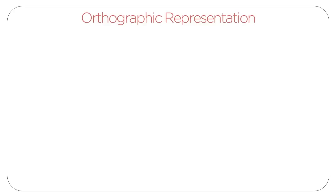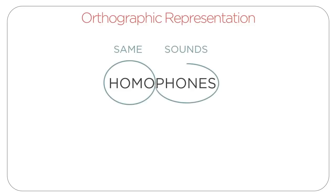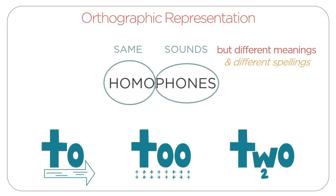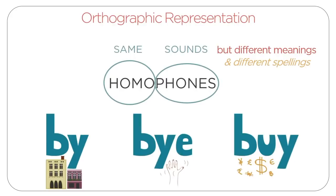Perhaps the best example of how orthographic representation works is by comparing homophones. Homophones are words that sound the same but have different meanings, and these differences are reflected in their different spellings. For example, 'to', 'too', and 'two' all sound the same but are written differently. The same is true for 'by', 'bye', and 'buy'.